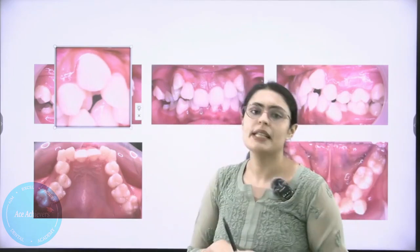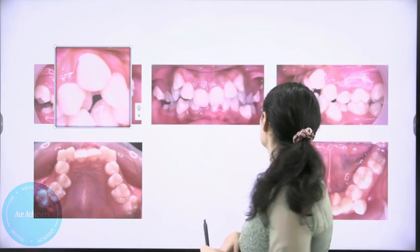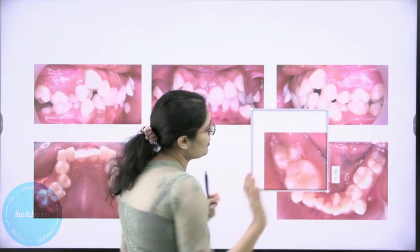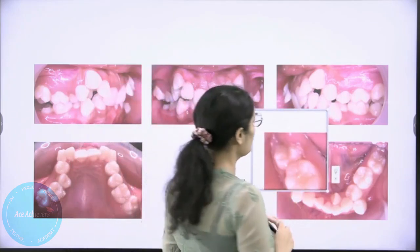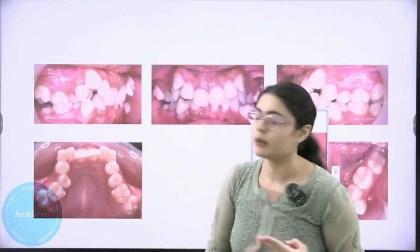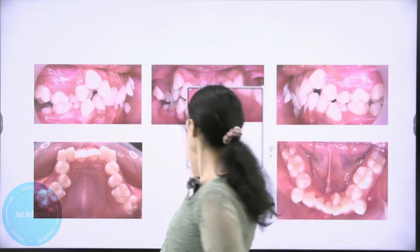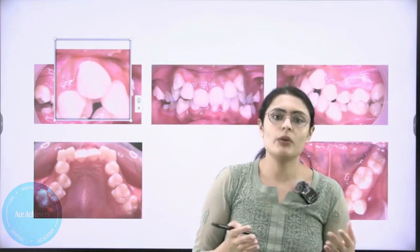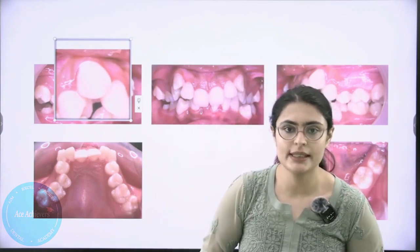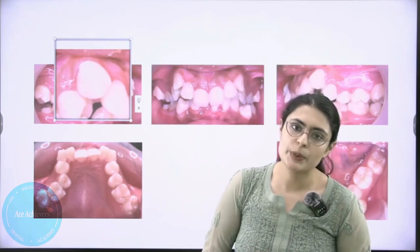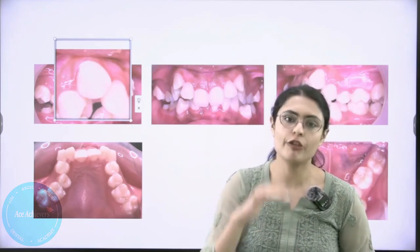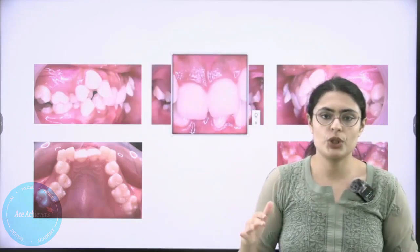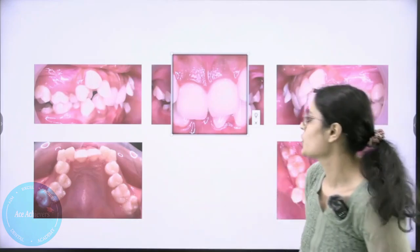The opposite of mesial is distal, so distoversion means the tooth is present more distally than it should be — we can see this in the seven, which is present more distally than it should be. The third term is supraversion, meaning the tooth is present more superiorly than it should be — this canine is in supraversion. The opposite is infraversion, meaning inferiorly positioned; the maxillary incisors of this patient are in infraversion.